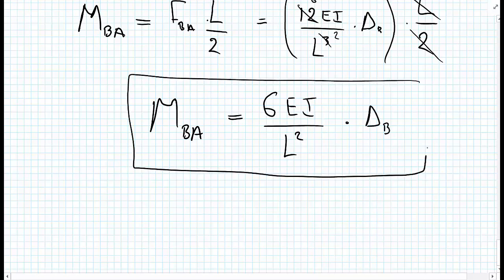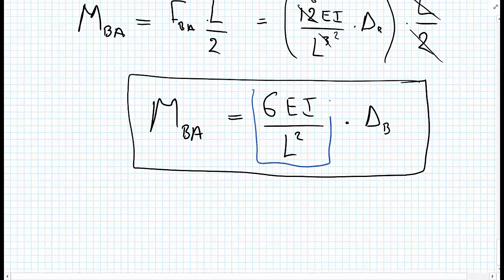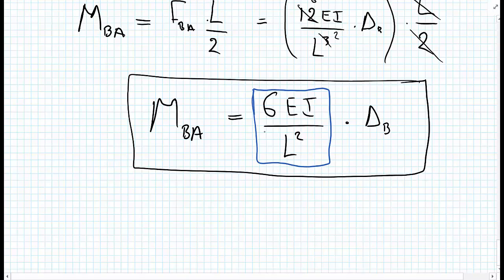This expresses delta B in terms of the moment. The term 6EI over L squared is what we call our stiffness coefficient, which we'll use for beam analysis using the slope deflection equations or further on for the direct stiffness method.